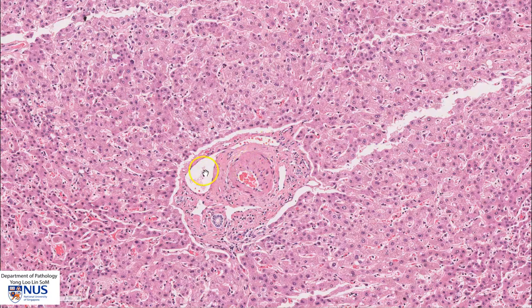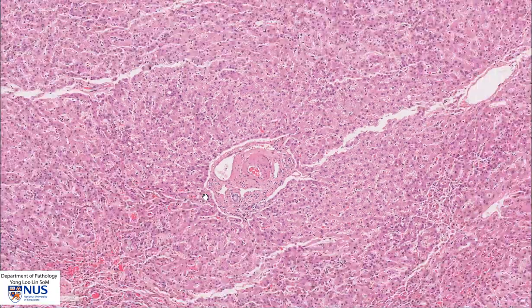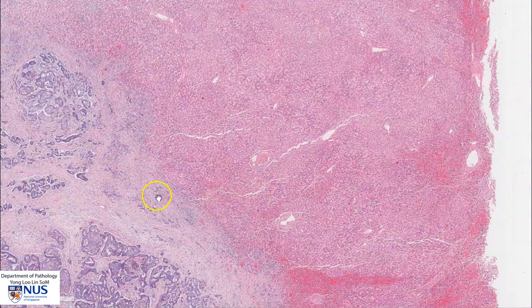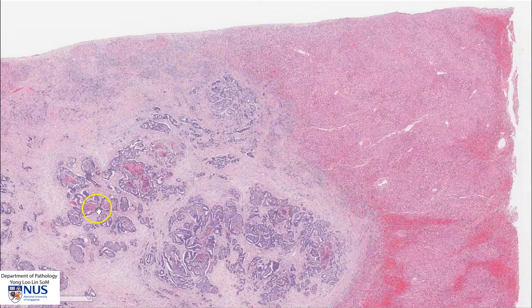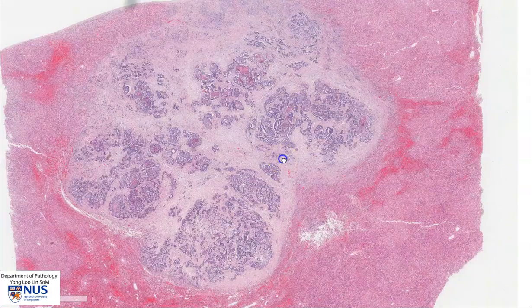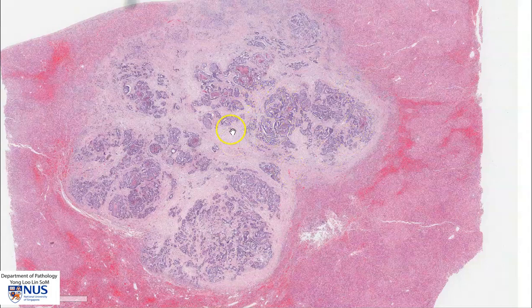The reason why colorectal carcinoma metastasizes frequently to the liver is because of the portal venous system, where the veins of the colon drain eventually into the portal vein and then into the liver. Here is the metastatic deposit. On low magnification, we can see that it has a relatively lobulated outline and is composed of malignant glands surrounded by a desmoplastic stroma.